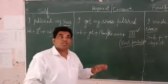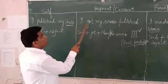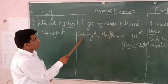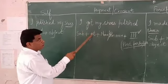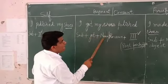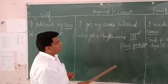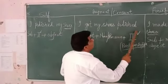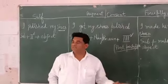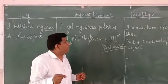So the structure of this sentence is: subject + 'got' (main verb) + noun + past participle (third form of the verb). In 'I got my shoes polished' — 'I' is the subject, 'got' is the verb, 'shoes' is the noun, and 'polished' is the past participle.